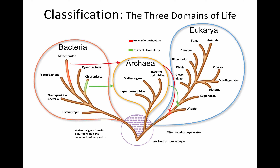Further classification — we can classify into what is referred to as the domain system. There are three domains: bacteria, archaea, and eukarya. The branching nodes indicate where the species and organisms diverged from a common ancestor.